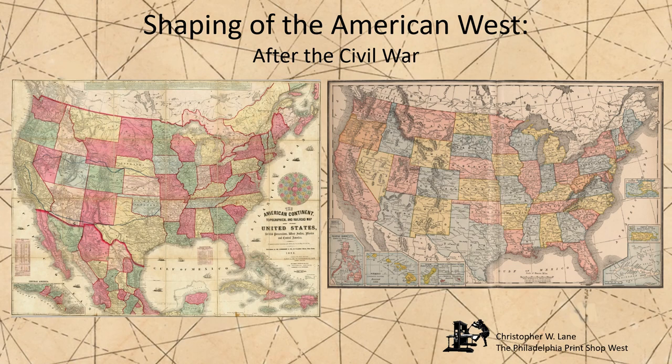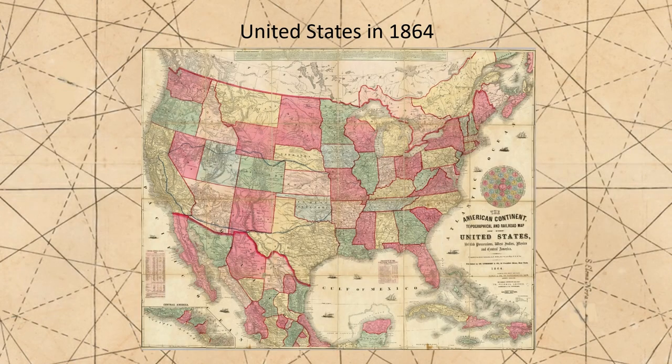By the end of the war, the internal borders of the American West were very similar to those of today, except in the Northern Plains, where a large Dakota Territory had a strange butterfly-like shape. The last major border change in the American West made during the Civil War was the 1864 creation of the Montana Territory.